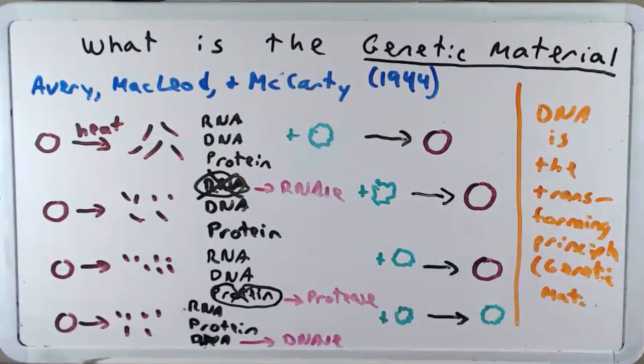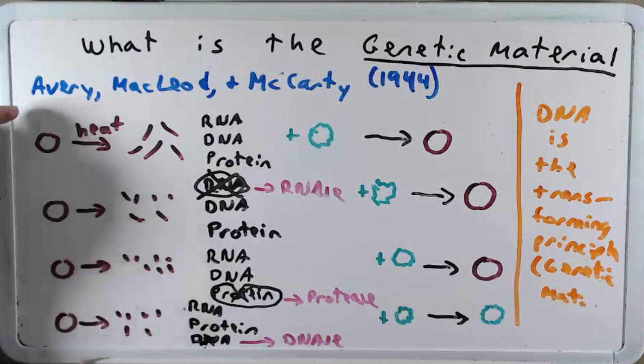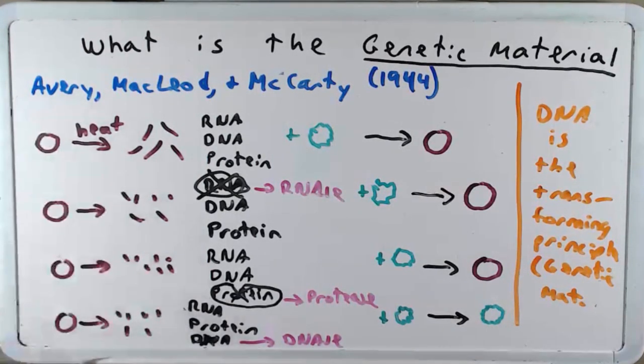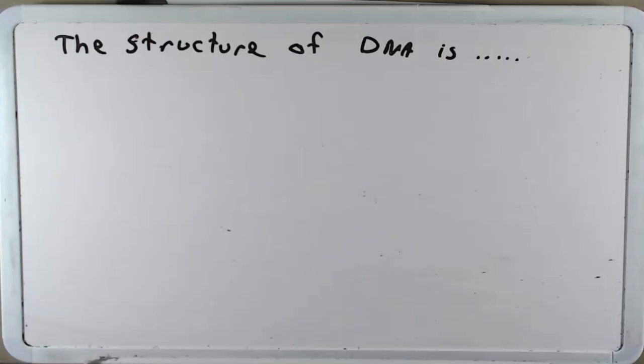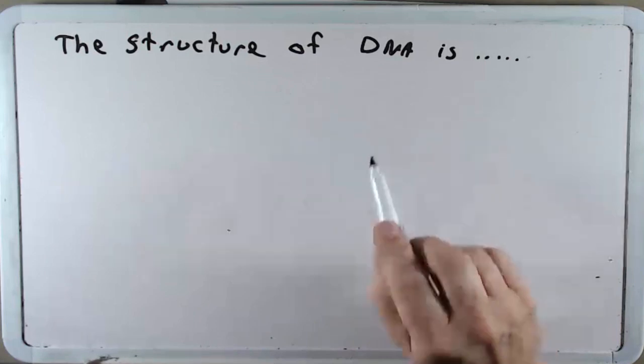Many other experiments occurred after this, that confirmed that DNA was the genetic material in a wide variety of organisms. I just want you to know the Griffith experiments and the Avery McLeod and McCarty experiments at the level of detail that we've described here. Now, after Avery McLeod and McCarty and others showed that DNA was the genetic material, there was a strong desire by scientists to understand and to discover the structure of DNA.